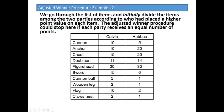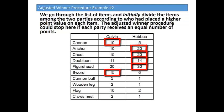We go through the list of items one by one and initially divide the items among the two parties according to who placed a higher point value on each item. For example, the cannon will go to Calvin because he awarded it more points — ten compared to Hobbes' five. The anchor will go to Hobbes. The chest will go to Hobbes, as will the doubloon and the figurehead. The sword will go to Calvin since he awarded it more points than Hobbes — fifteen compared to six. The cannonball, the wooden leg, the flag, and the crow's nest also go to Calvin.